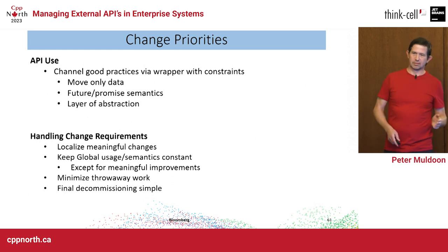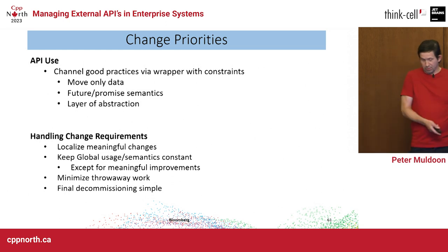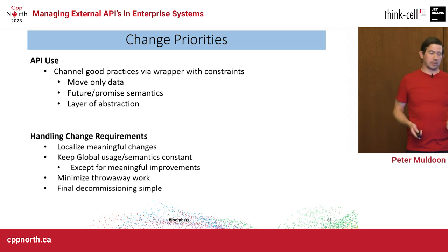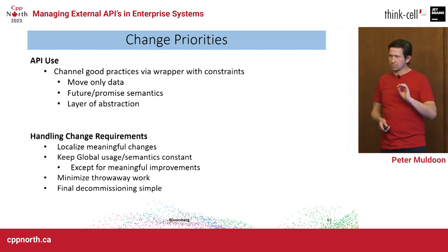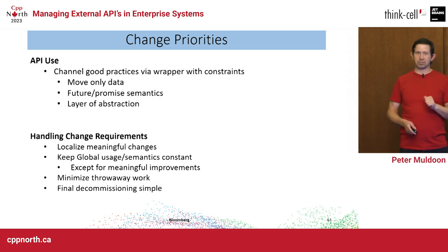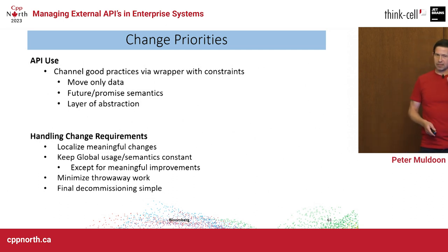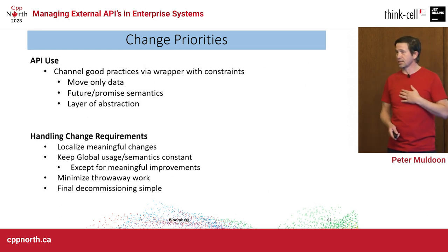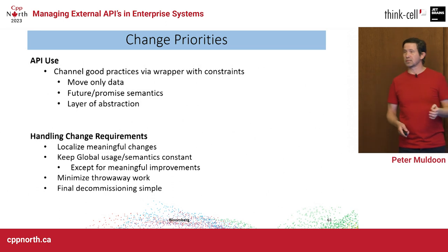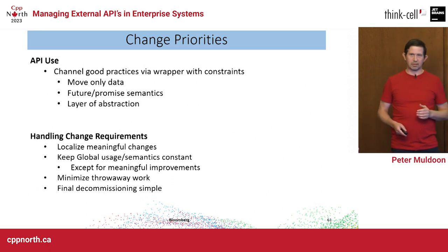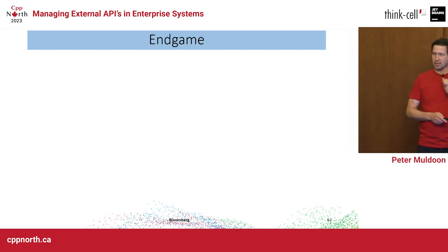Keep global contracts the same — that was the key. If I hadn't done that, I would have had sweeping changes throughout my system. Except for meaningful improvements that aren't going to be thrown out — like get_response() — keep contracts the same. This minimizes throwaway work and keeps the final decommissioning simple. This actually got decommissioned by someone who didn't do the original changes, with no fallout.